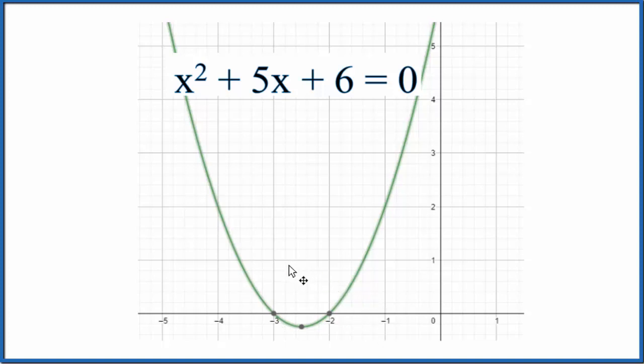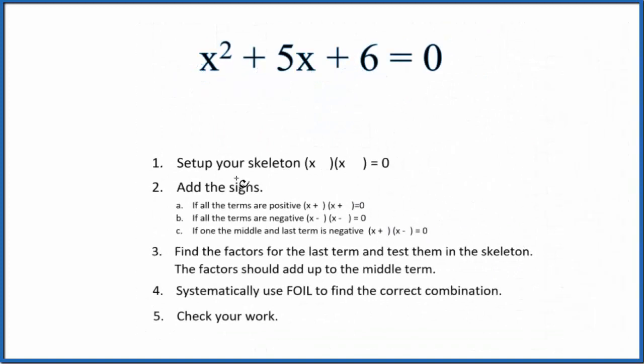But if you didn't have the graph, you'd have to factor the equation to figure that out. Let's do that. So let's use these rules here to factor x squared plus 5x plus 6 equals 0. First, we set up our skeleton.